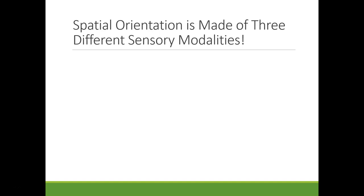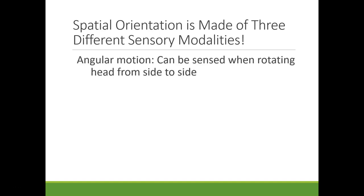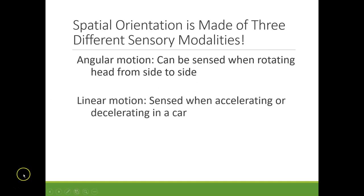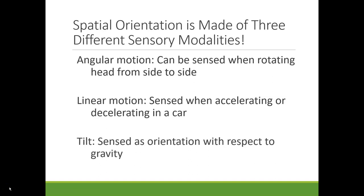Spatial orientation — our sense of where we are in space — is made up of three different sensory modalities. We use the word modalities rather than qualities because they use different sensory organs and different methods of energy. We have angular motion, which you sense when you rotate your head from side to side, such as when you shake your head no. We have linear motion, which is sensed when you suddenly accelerate or decelerate in a car. And then we have tilt, which is sensed as orientation with respect to gravity — you experience it when you nod your head down and back up.